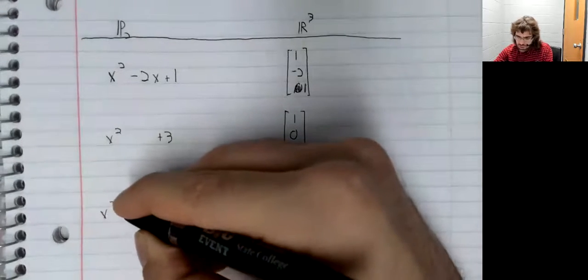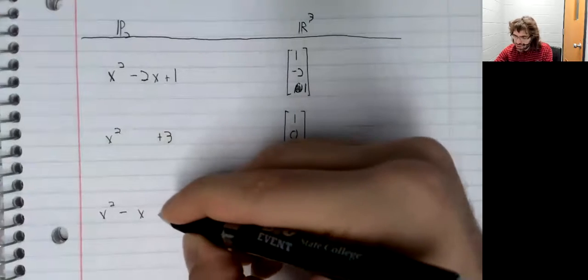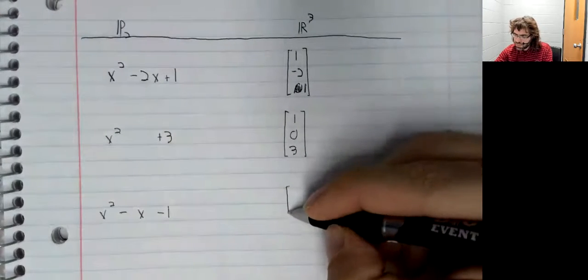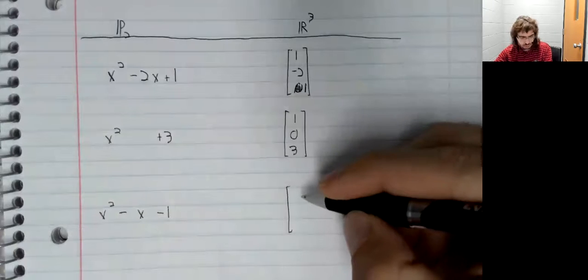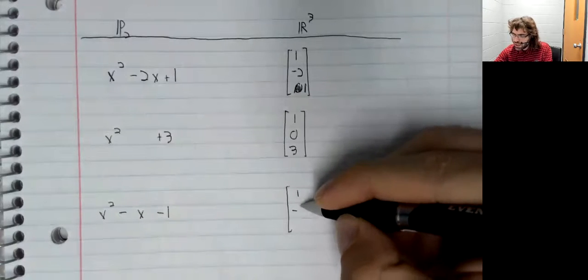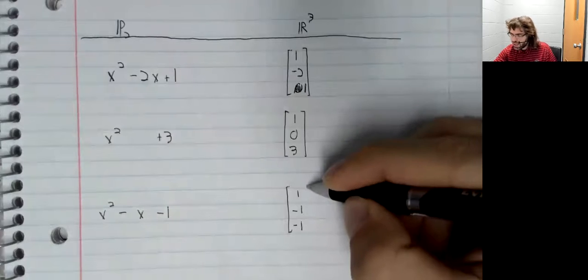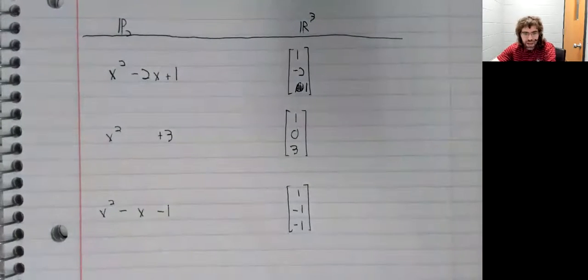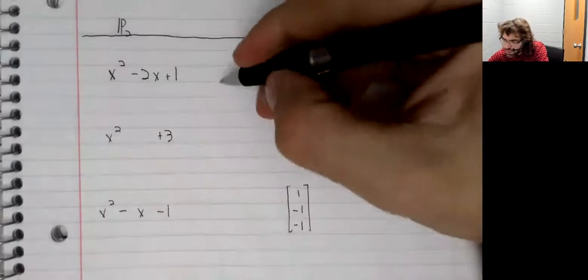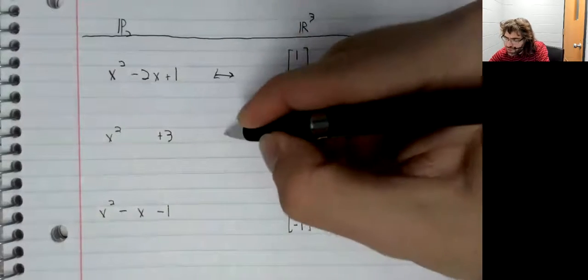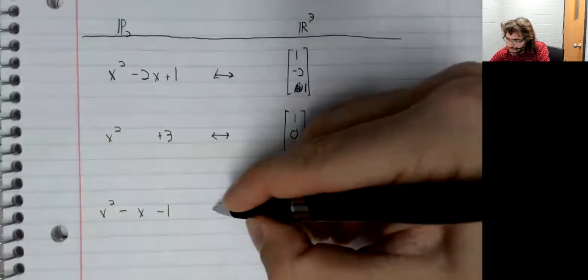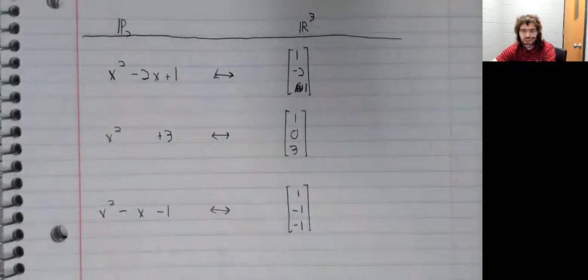And we've got x squared minus x minus one, and its image over here: one, negative one, negative one. And these vector spaces are indistinguishable from a vector space point of view. And these vectors are indistinguishable from a vector space point of view.